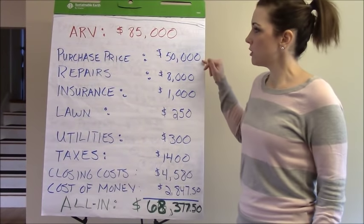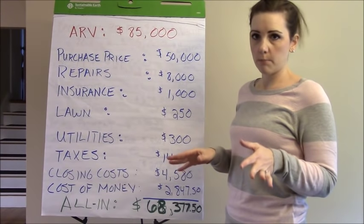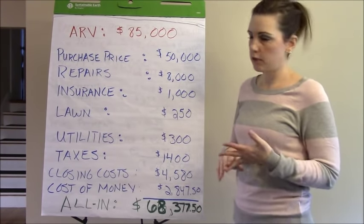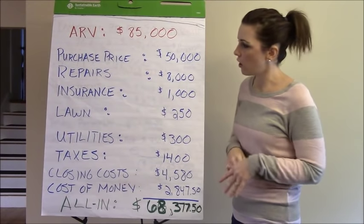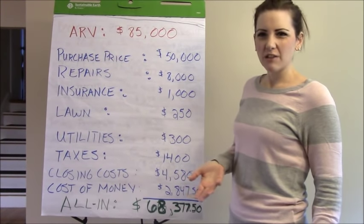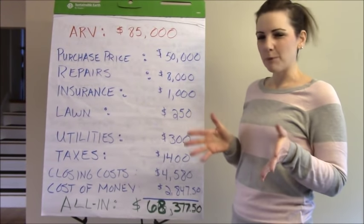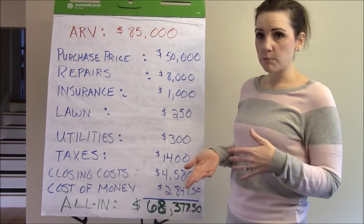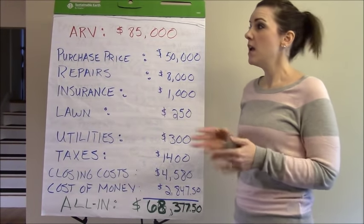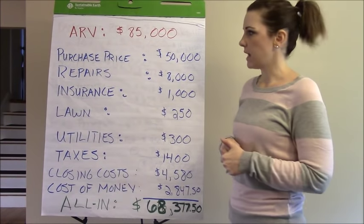We purchased the property for $50,000. This was a private off-market purchase between us and the seller — nothing on the MLS, no realtor involved. The property needed about $8,000 in repairs: fluff up the bathroom a little bit, add fresh paint, a little bit of carpet on the second floor, and we were ready to roll. It wasn't a big project at all.